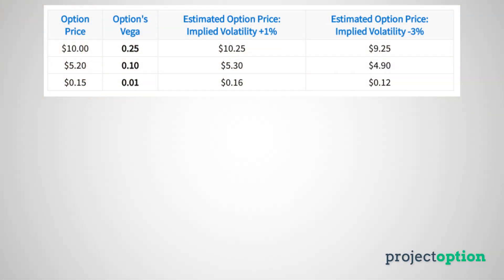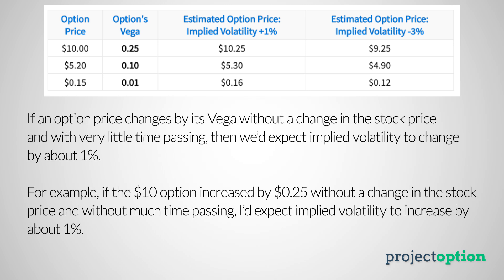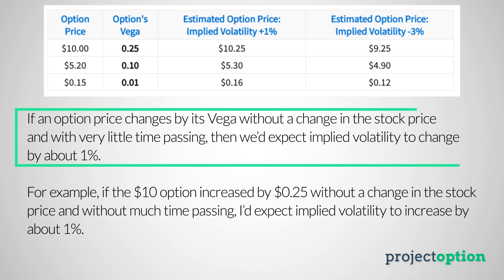The reason this makes explaining vega tricky is because vega is typically described as: if implied volatility increases by 1%, then the option price will increase by its amount of vega, and if implied volatility falls by 1%, then the option price will decrease by the amount of its vega. But as I just explained, implied volatility does not just magically change — option prices have to change first. So I like to actually explain vega in the opposite manner: if an option price changes by the amount of its vega without any change in the stock price and without any passage of time, then we should expect implied volatility to change by about 1%.